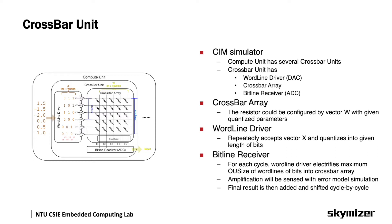Let's go a little deeper into the CIM hardware simulator. A computing unit may have several crossbar units, each with three components: a word-line driver, a crossbar array, and a bit-line receiver. The word-line driver accepts an input vector x and quantizes the value into a given number of bits. Each cycle it passes bits into the crossbar array, performs the MAC operation, and sends the result to the bit-line receiver, which accumulates and shifts the result cycle by cycle to get the final output.